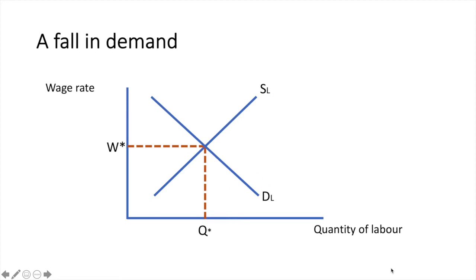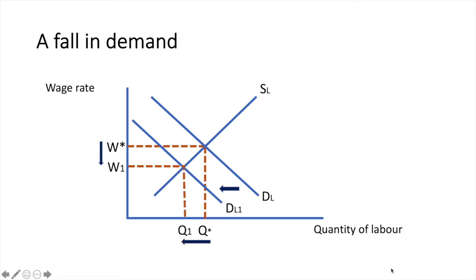Similarly, if the marginal revenue product falls due to a fall in the price of the product, then the demand for labour across the industry would fall, shifting the demand for labour from DL to DL1. This would cause the equilibrium wage rate to fall from W star to W1 and equilibrium quantity of labour to fall from Q star to Q1.